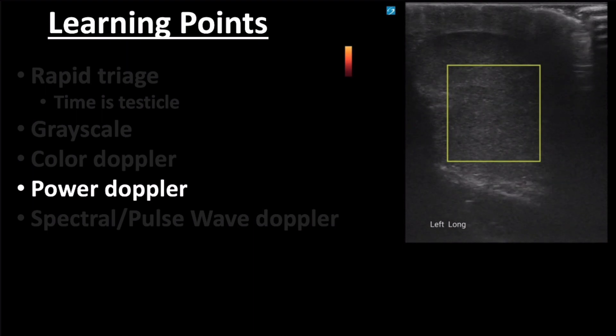One of the negatives of utilizing color Doppler is a limitation in low flow states, like in prepubertal patients with low testicular volumes.